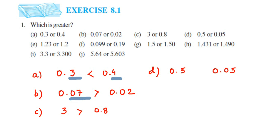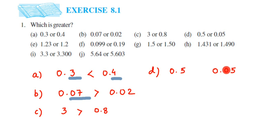The next question: 0.5 and 0.05. Compare the whole parts — both are zero. After the decimal, the leftmost number: here we have 5 and here we have 0. Five is greater than zero, which means 0.5 is greater than 0.05.